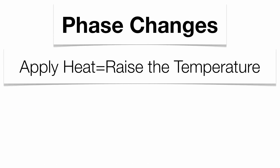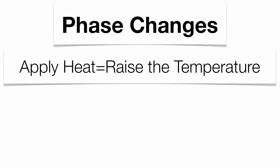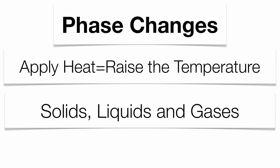Now, when we talk about phase changes, the big thing is applying heat energy. When you apply heat energy, you're going to raise the temperature of that specific substance. So when you raise the temperature of a substance, you'll go from a solid to a liquid to a gas. If you decrease the amount of heat energy, you're going to cool it down — going from a gas back down to a liquid, back to a solid again.